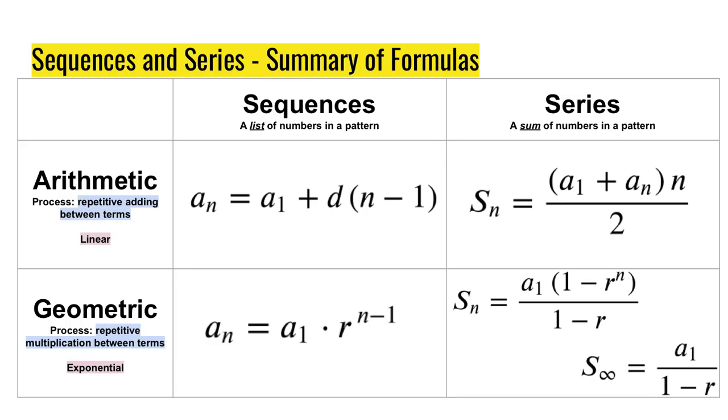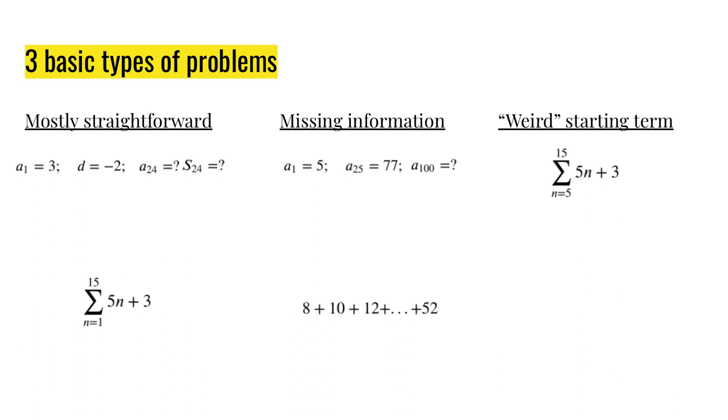First, a quick review of all of the formulas. Remember that a sub n stands for a term in the list. So a sub 3 would be the third term in the list and that can refer to a geometric term or an arithmetic term. S sub n stands for a sum of some number of terms. So s sub 3 would be to add up a sub 1, a sub 2, and a sub 3. There is an infinite geometric sum that is possible only when r is between 0 and 1. It has to be a small fraction that makes the number get smaller over time.